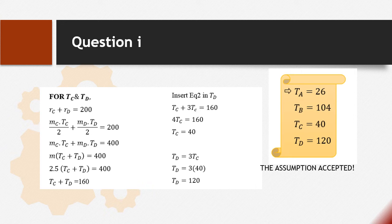As the conclusion for question 1, we get the value of teeth of each gear: TA equals 26, TB equals 104, TC equals 40, and TD equals 120. As mentioned in the question, we need at least 24 teeth for each gear. From our assumption, the least number of teeth is 26, so the assumption we made earlier is accepted.